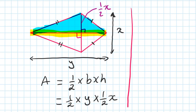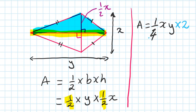If I simplify this: a half times a half gives me a quarter. So the area of one triangle is a quarter of xy. But because the kite has two triangles, I double it — the twos cancel — giving me a half xy for both triangles, which is the area of the kite.